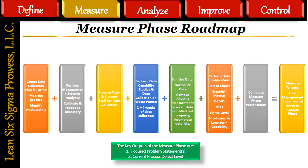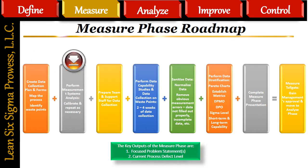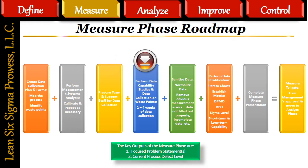The Measure Roadmap is a summary of all of the steps required to complete the Measure phase. Step 1: Create data collection plan and forms, map the process, and identify all of the waste points on the process map. Step 2: Perform Measurement Systems Analysis — any gauge that will be used to measure data during the Measure phase must be reliable and accurate. If it is not, it must be calibrated. If the gauge cannot be calibrated, it must be replaced with a reliable and accurate gauge. Step 3: Prepare team and support staff for data collection. Support staff are those people who are not part of the project team but who will play a vital role during the data collection process. Step 4: Perform data capability studies and data collection on waste points at the Gemba. Data collection typically lasts 2 to 4 weeks in total duration.